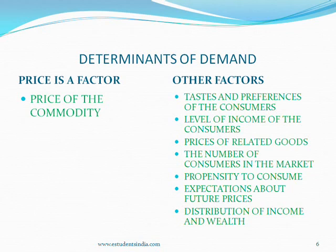Fourth, the number of consumers in the market: the greater the number of consumers for a good, the greater the market demand for it. Fifth, changes in the propensity to consume: if people's propensity to consume rises, then out of the given income, they would spend a greater part of it and demand for goods will rise. If propensity to save increases, then propensity to consume declines, and consumers spend a smaller part of their income, so demand for goods will decrease.